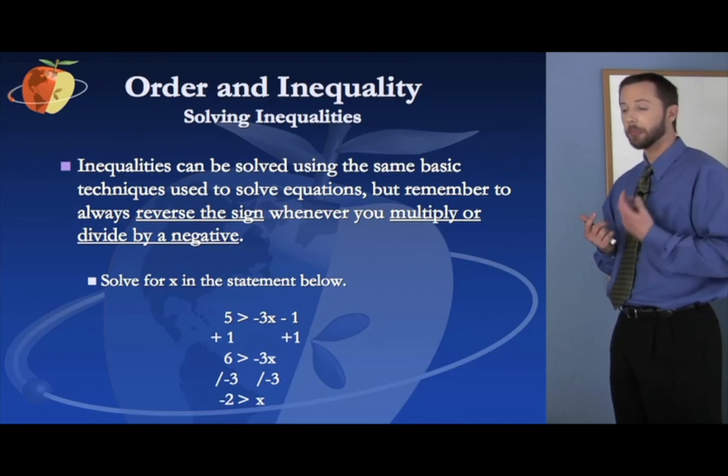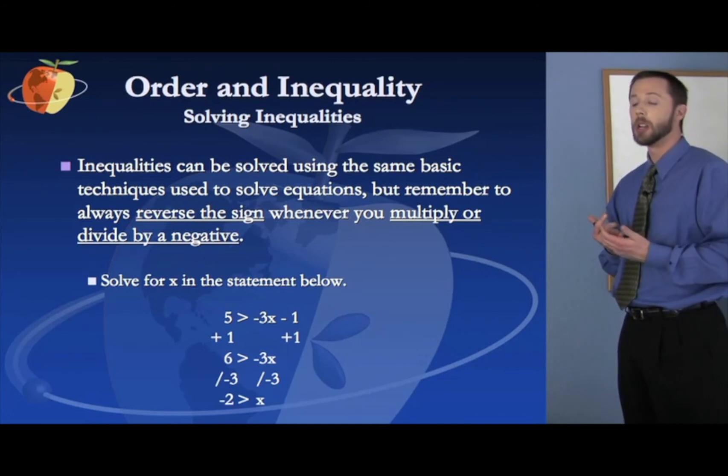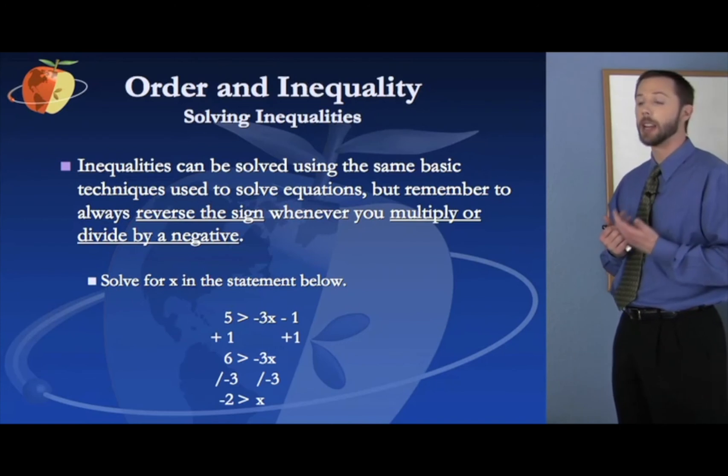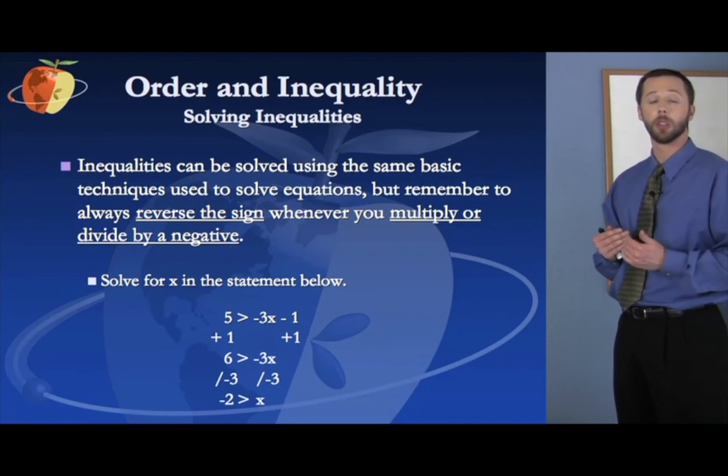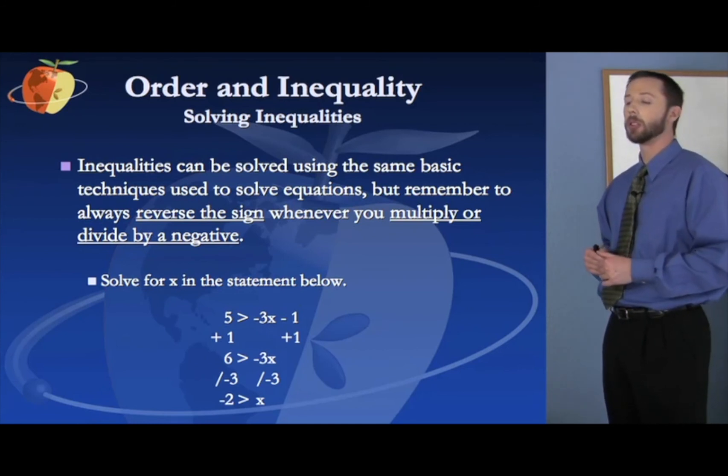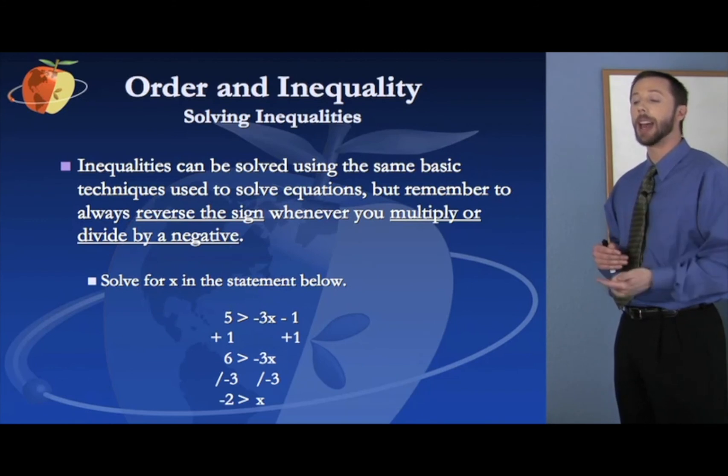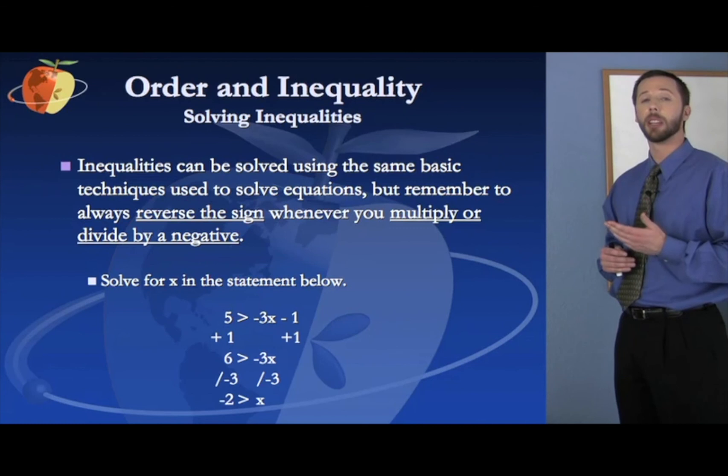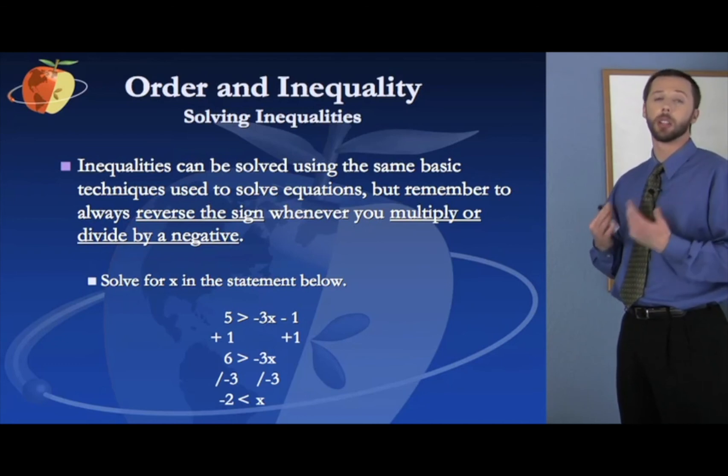Solve for x in the statement below. 5 is greater than negative 3x minus 1. We can start by adding 1 to both sides. So get rid of that 1 on the side where the x is. We add 1 to both sides. The minus 1 goes away, and 5 plus 1 becomes 6. So now you have 6 is greater than negative 3x. We want to get x by itself. So what's being done to x right now is it's being multiplied by negative 3. So we take the algorithmic opposite and we divide by negative 3. So negative 3x divided by negative 3 is simply x. But 6 divided by negative 3 gives us negative 2. But what we need to remember here is that we divided by a negative. So that means we have to reverse the sign. So now we get negative 2 is less than x. So just remember that added step. Whenever you multiply or divide by a negative, you have to reverse the sign. Other than that, you're solving this the same exact way you would with any other single variable algebraic equation.